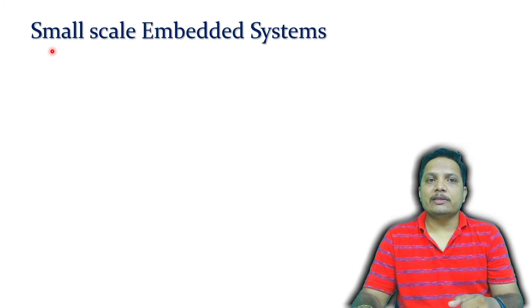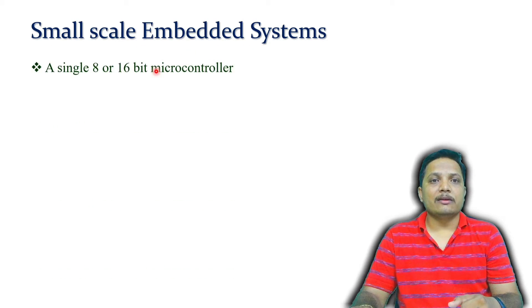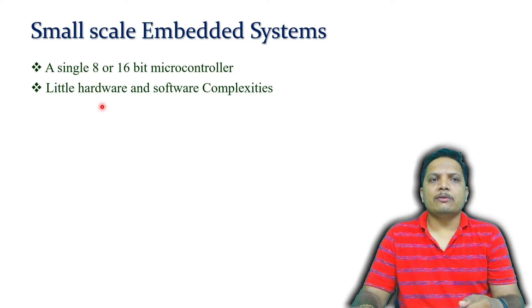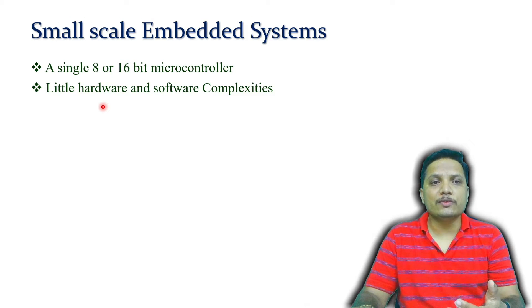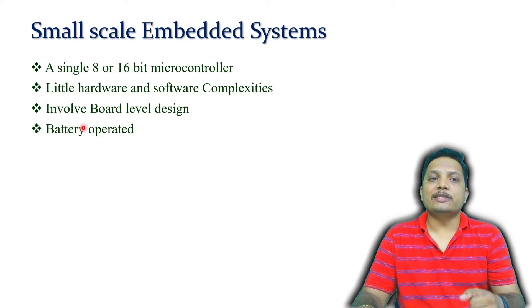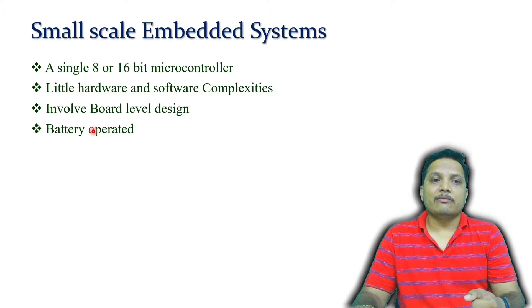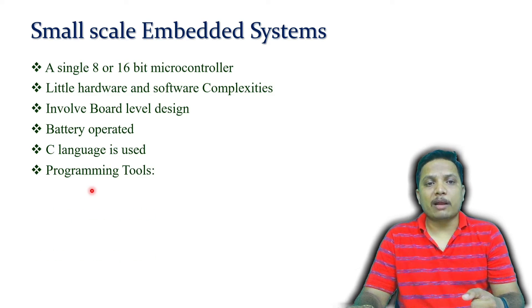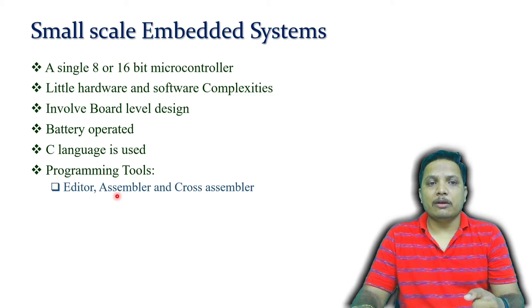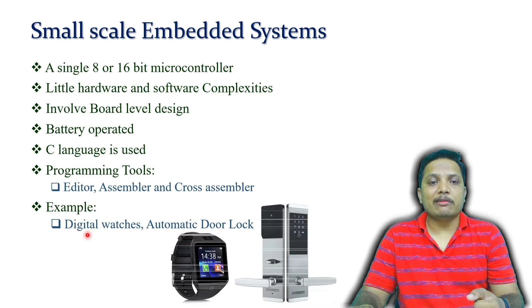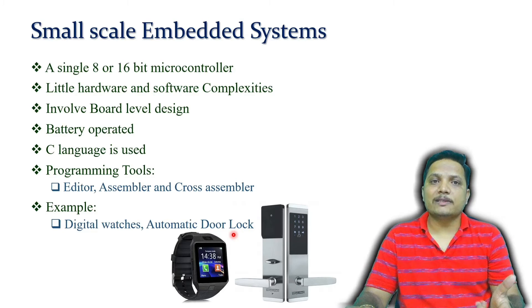In a small-scale embedded system, we use an 8-bit or 16-bit microcontroller with very little hardware and software, making it lower cost. It involves board-level design and can be operated with a battery, programmed using C language. Programming tools include an editor, assembler, and cross assembler. Examples include a digital watch or automatic door lock.